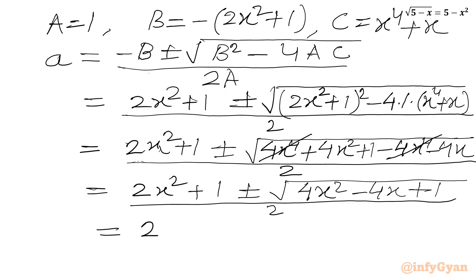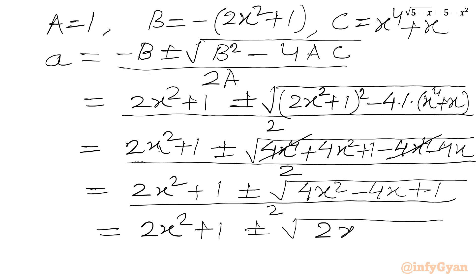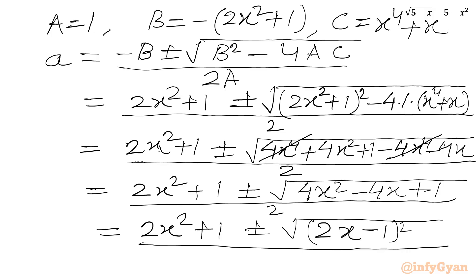We can recognize that 4x² minus 4x plus 1 is the perfect square of (2x minus 1)². We can check: (2x)² is 4x², twice the ab term gives minus 4x, and b² is 1.